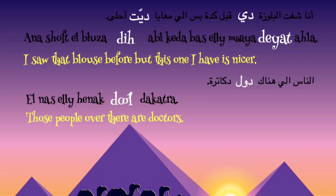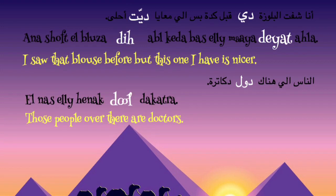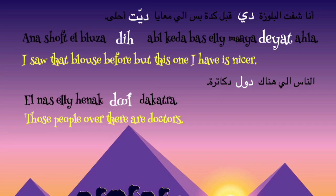Third sentence: 'El nas elli henak dol doktora.' 'El nas' means the people. 'Elli henak' means over there. 'Dol' means those. 'Doktora' means doctors. So: those people over there are doctors.